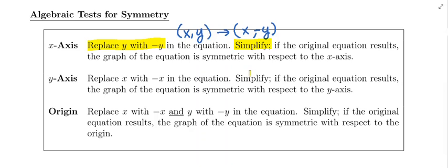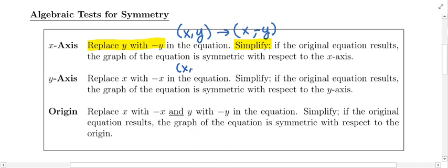A similar thing for y-axis symmetry. We know for y-axis symmetry if you start with a point, x will change sign and y will stay put. So to test for y-axis symmetry on our equation, we're going to replace x with -x and then simplify. If we get the original equation back,